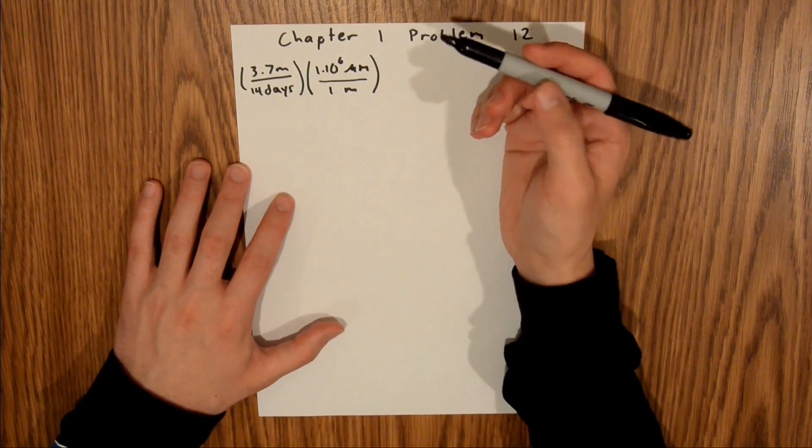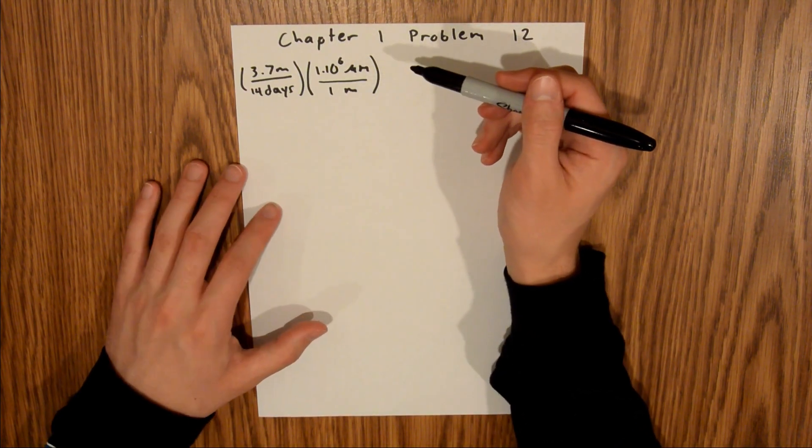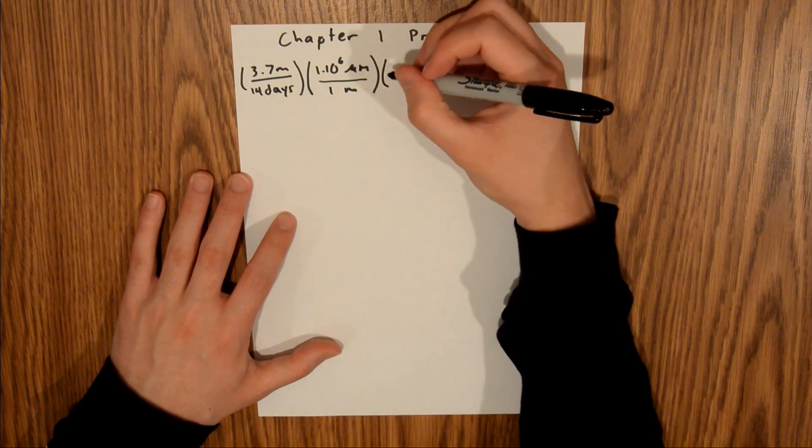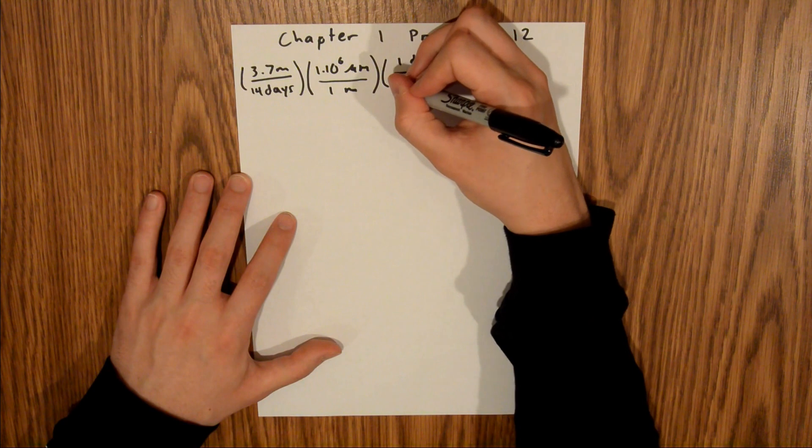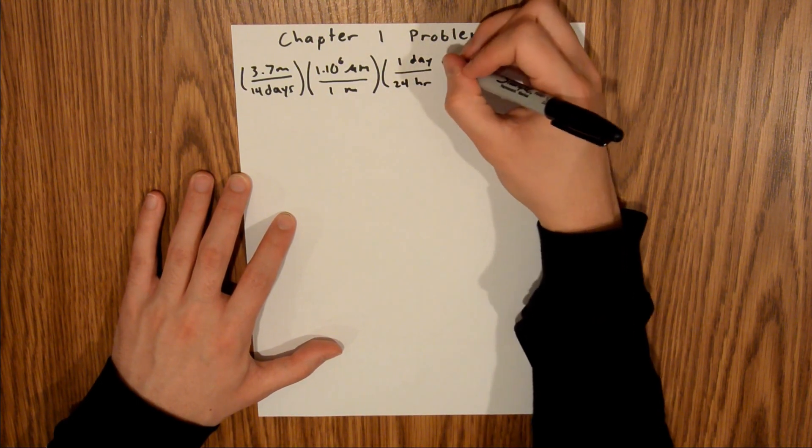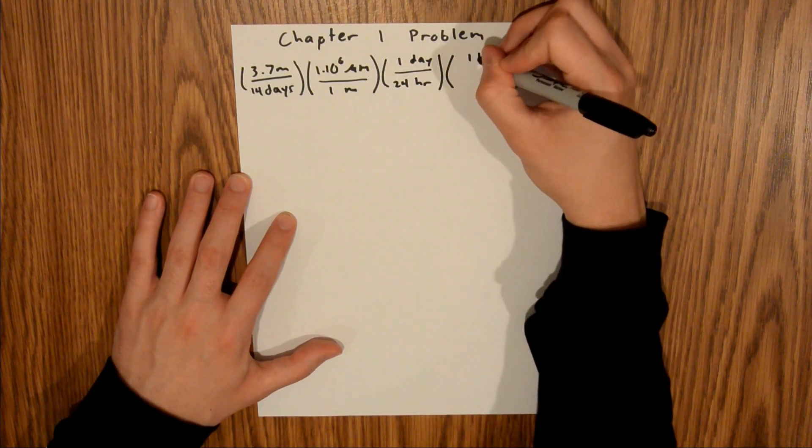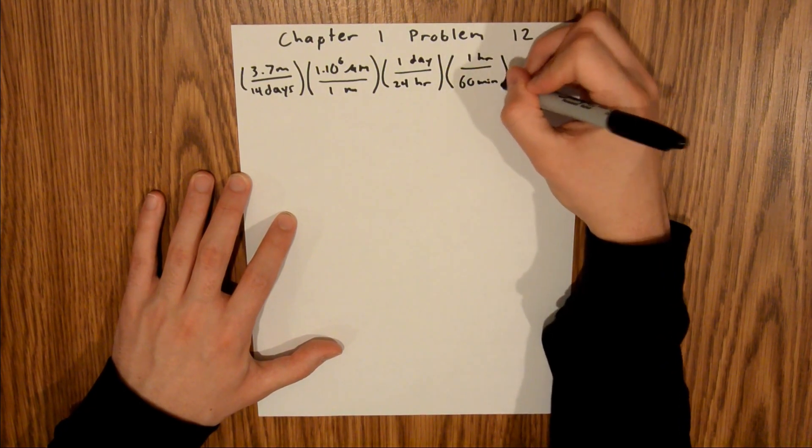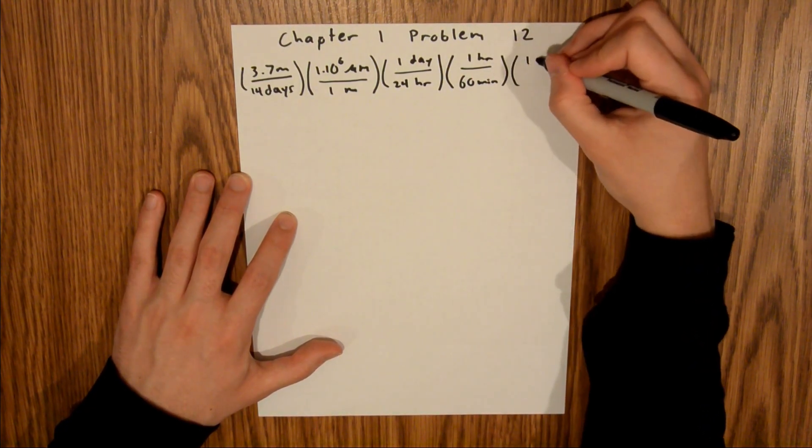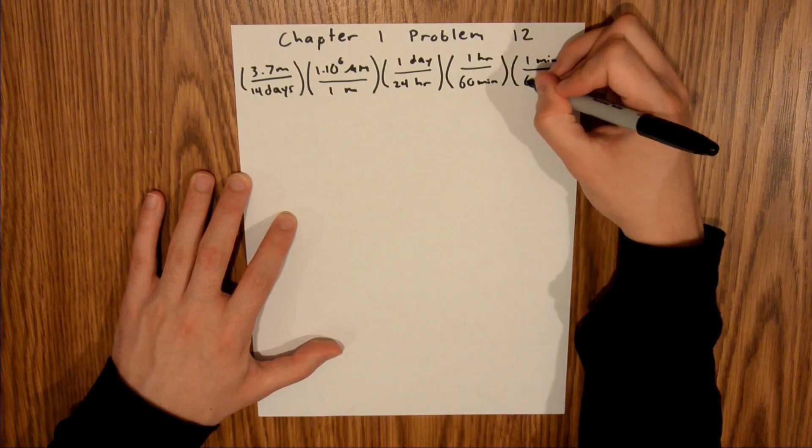And so that's all we need to do for the conversion from meters to micrometers. And for days, what we're going to do is we know 1 day is equal to 24 hours, 1 hour is 60 minutes, and 1 minute is 60 seconds.